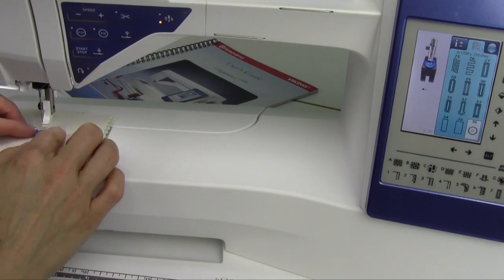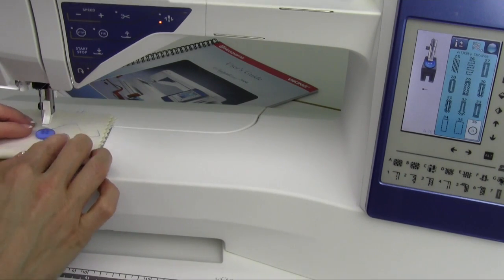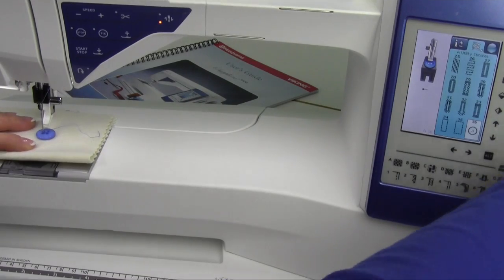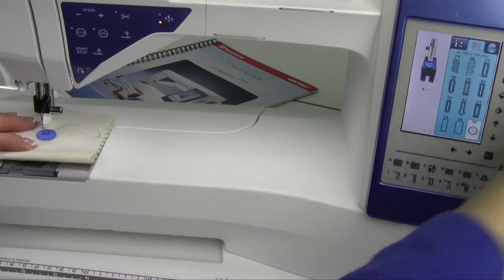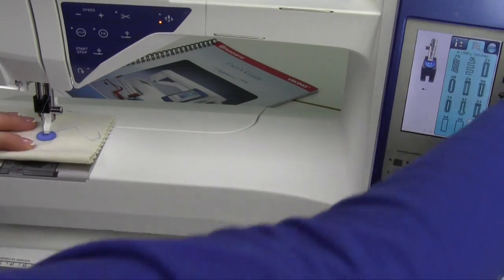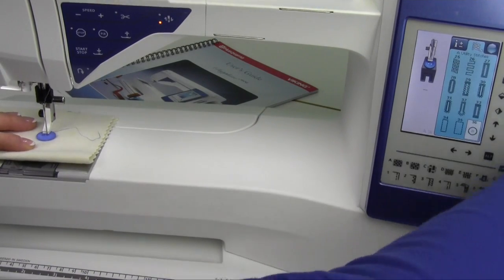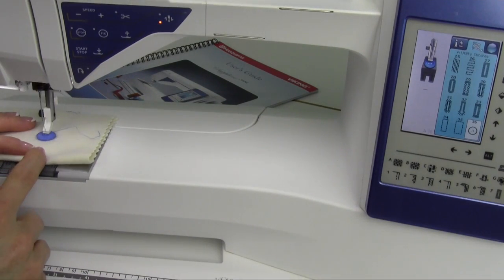Then if we want to go ahead and do the other ones, just go ahead and rotate it 180 degrees. Once again, lower the needle into one of the left eye, lower the presser foot and then just check the swing and you're set to go.